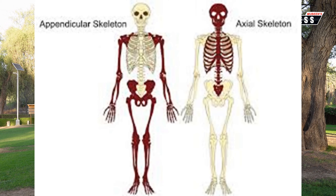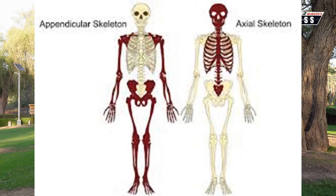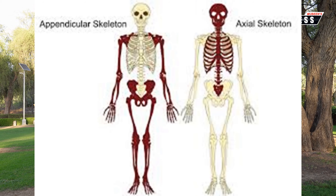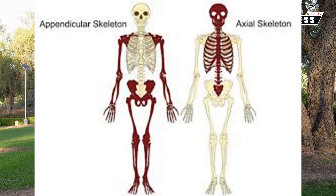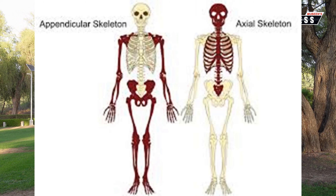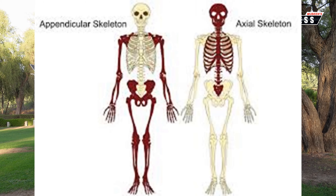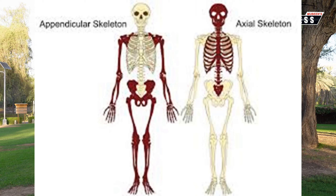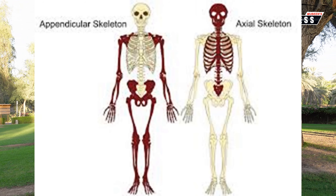The two types are appendicular and axial. The axial skeleton includes the skull, ribs, and vertebrae. The appendicular skeleton includes the hands, shoulders, legs, and pelvic girdle bones. These are important bones.